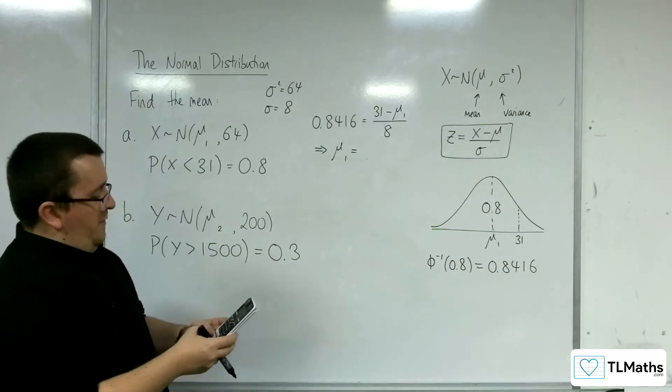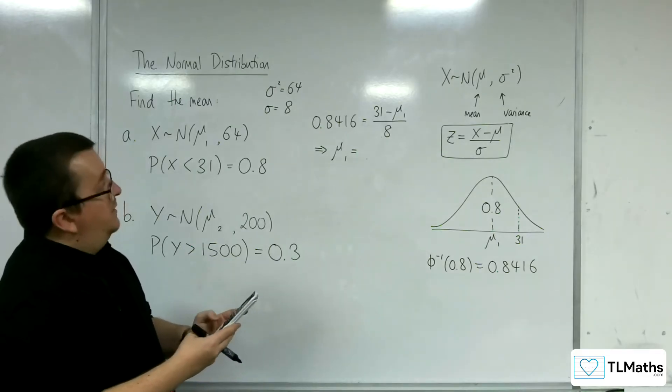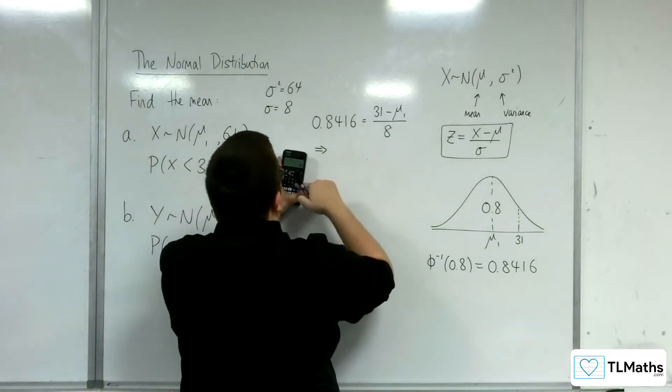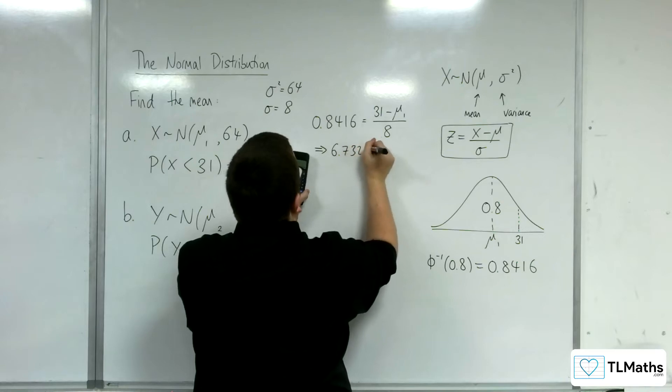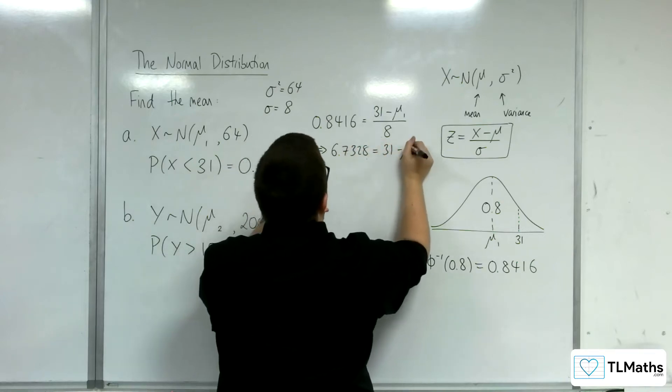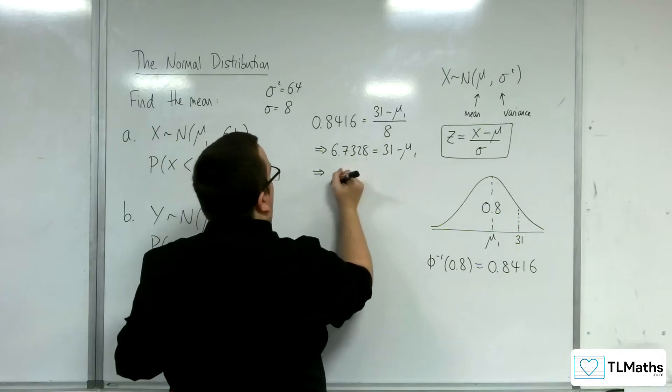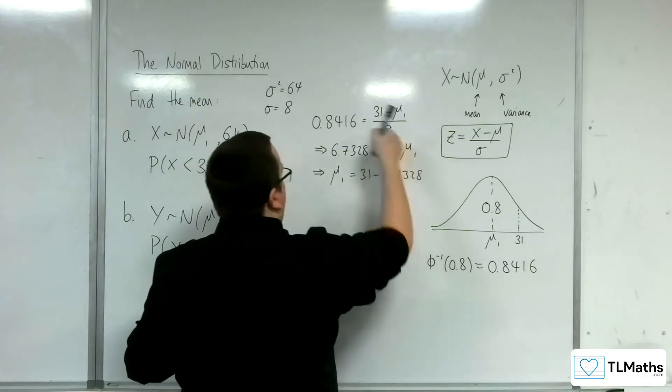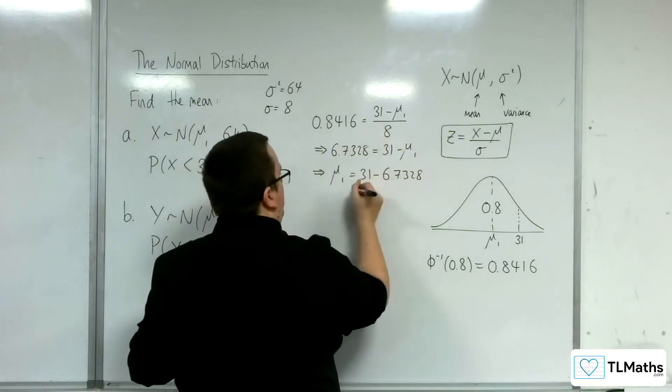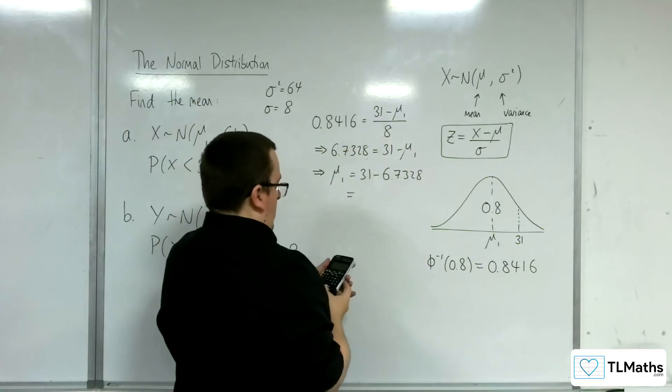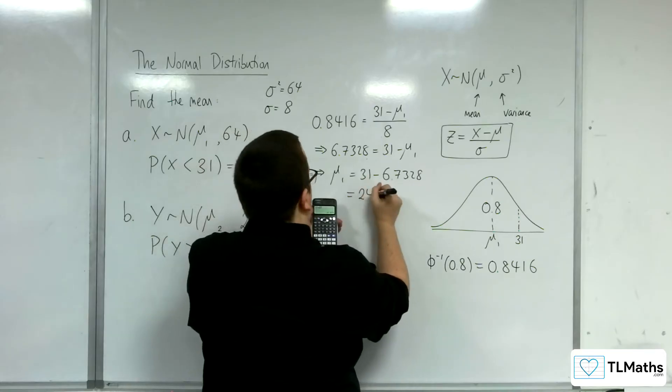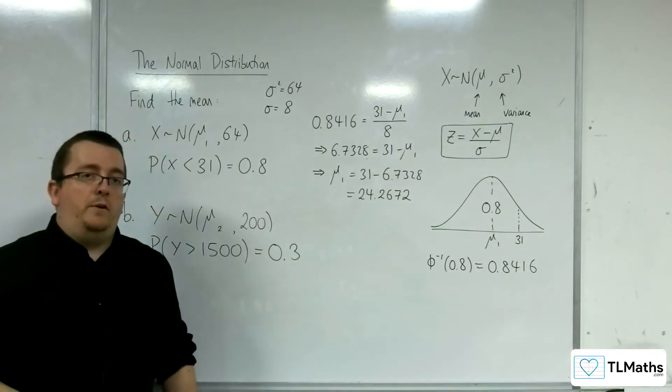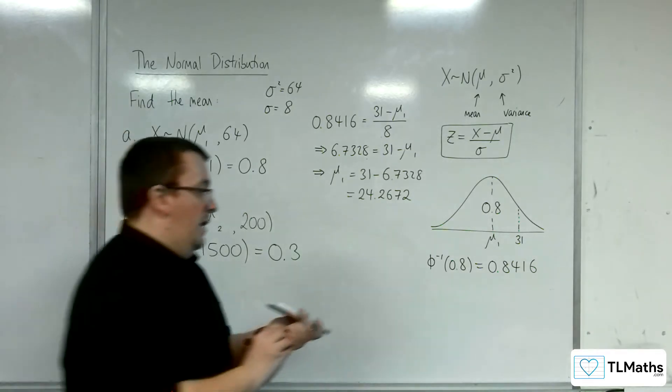So we can multiply 0.8416 by 8. Well, let's do this in two stages. Multiply up by the 8, and we get 6.7328 is 31 take away μ₁. So μ₁ is 31 take away 6.7328. Add that over to the other side, subtract that to the other side. And so we should get 24.2672. So that is the mean that I was looking for, that solves number 1, or part A rather.